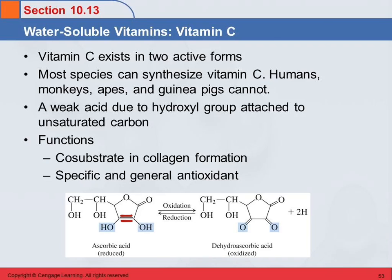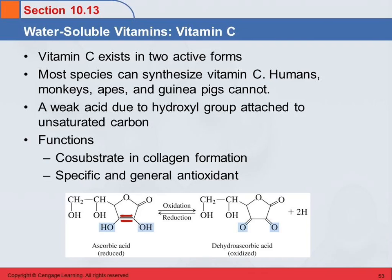So this double bond here — if that was an O, does that look like an acid? This carbon double bonded with an oxygen and the OH over here, that would be a carboxylic acid group. There is not an oxygen here, but because there's that double bond, this hydrogen is slightly acidic. So it does act as a weak acid, hence the name ascorbic acid.